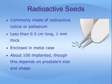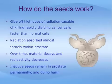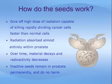The seeds are positioned to evenly radiate the entire prostate plus a margin outside the prostate of just a few millimeters. The seeds give off a high dose of radiation capable of killing rapidly dividing cancer cells faster than normal body cells, and that is absorbed almost entirely within the prostate. The dose of radiation delivered with brachytherapy is about one and a half times greater than can be given with external radiation treatments. The term brachy is Greek for short distance, therefore brachytherapy means therapy at short distance, or treatment of cancer at the source.